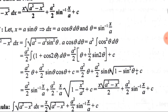With sin θ = x/a and cos θ = √(1 − sin²θ) = √(1 − x²/a²), substituting back, we find (a²/2)·sin⁻¹(x/a) + (a²/2)·(x/a)·√(1 − x²/a²) + C. After simplification, this gives (x/2)·√(a²−x²) + (a²/2)·sin⁻¹(x/a) + C.